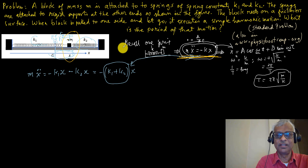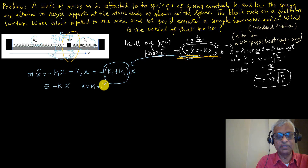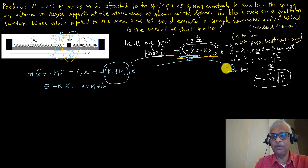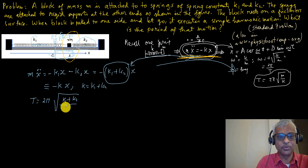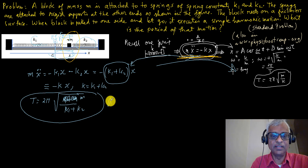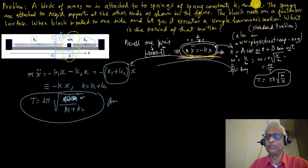This simplifies to m·x-double-dot = −(k1 + k2)·x. Comparing with the single-spring form, the effective spring constant is k_eff = k1 + k2, which is just the sum of the two. So I write this as −k·x where k = k1 + k2, and then the time period is T = 2π√(m/(k1+k2)). That's the answer — almost trivial once you see it.